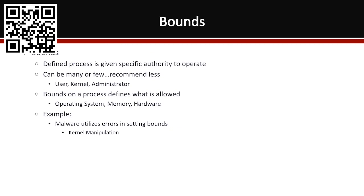Bounds on a process defines what is allowed — depending on the operating system, what kind of connectivity can it have, how much memory do you have and do you leak memory, and what are your hardware limitations? It's important to set these boundaries because malware will utilize errors in your bounds to break through and gain access. A good example is kernel manipulation — the kernel is typically segregated off, but if there are errors in the operating system or processes, it could be exploited.